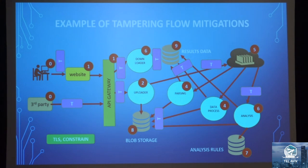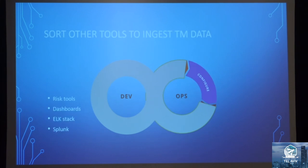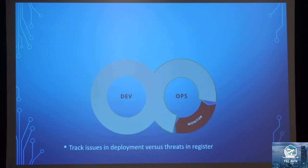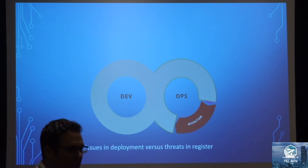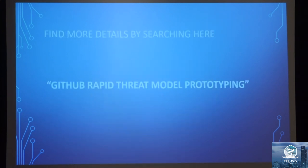Tampering flow mitigation as an example. You can then stop pull requests using this information. You can send it out as JSON or XML, attach the data to the builds and put it into a Jenkins pipeline. You can also do ELK Stack, Splunk, dashboards — start creating dashboards to pass this data back so people can consume it. Then you track the issues in a risk register because now it's data you can pass through the pipeline. And then you do model storming again. Thank you very much.